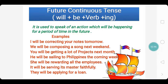The verb form is will plus be plus verb plus ing. Verb plus ing is the present participle form. Now look at the examples. I will be correcting your notes tomorrow. We will be composing a song next weekend. You will be getting a lot of projects next month. He will be sailing to Philippines the coming week. She will be rewarding all the employees. It will be serving its master faithfully. They will be applying for a loan.